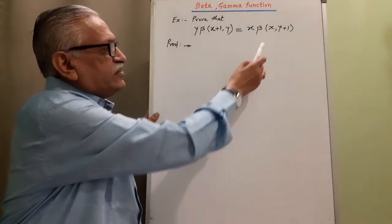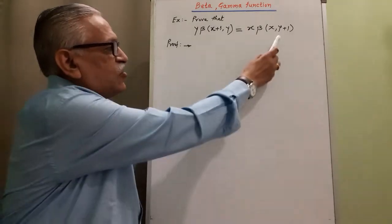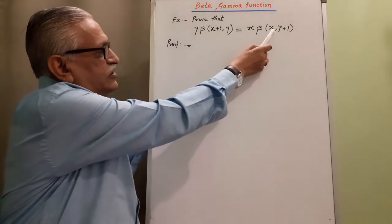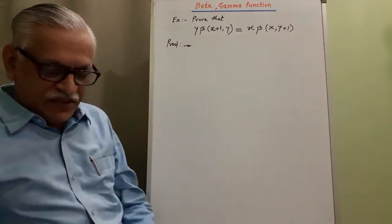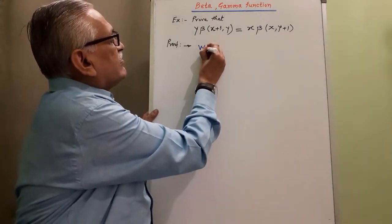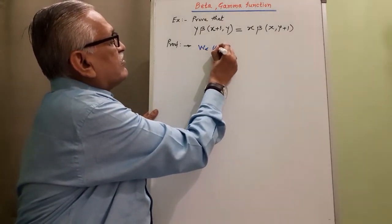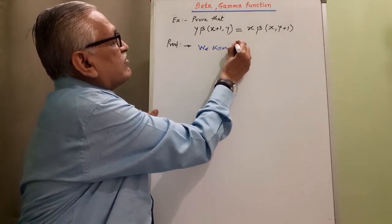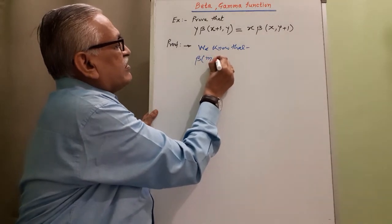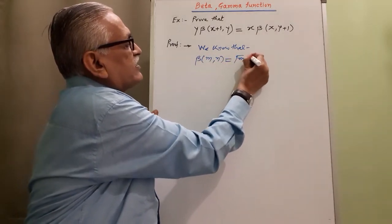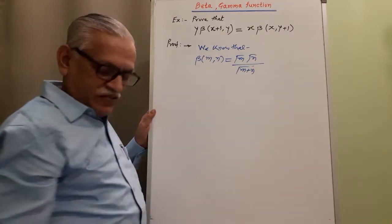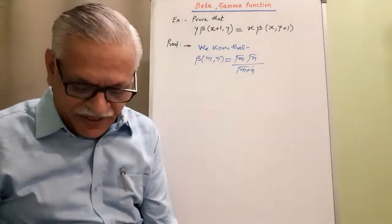Here, we have to convert this beta into another form of beta. And to prove this, we take the help of the relation. We know that beta of M, N is equals to gamma M, gamma N divided by gamma M plus N. We take the help of the relation between beta and gamma function.